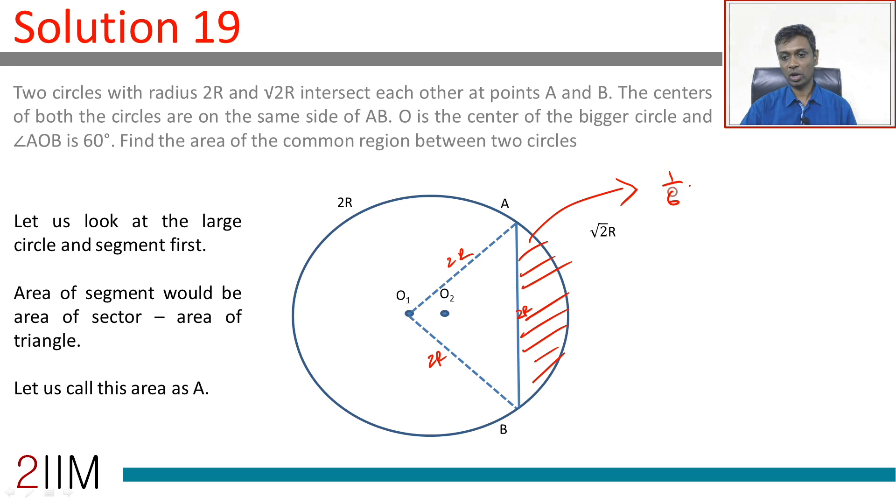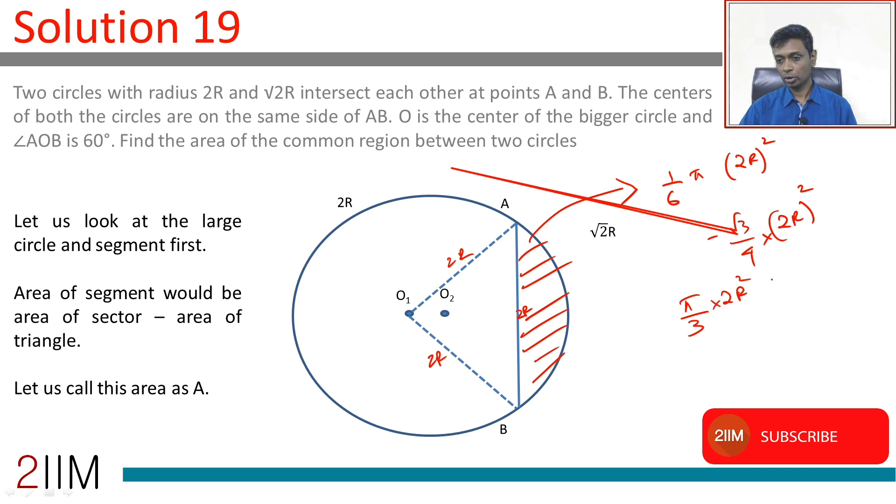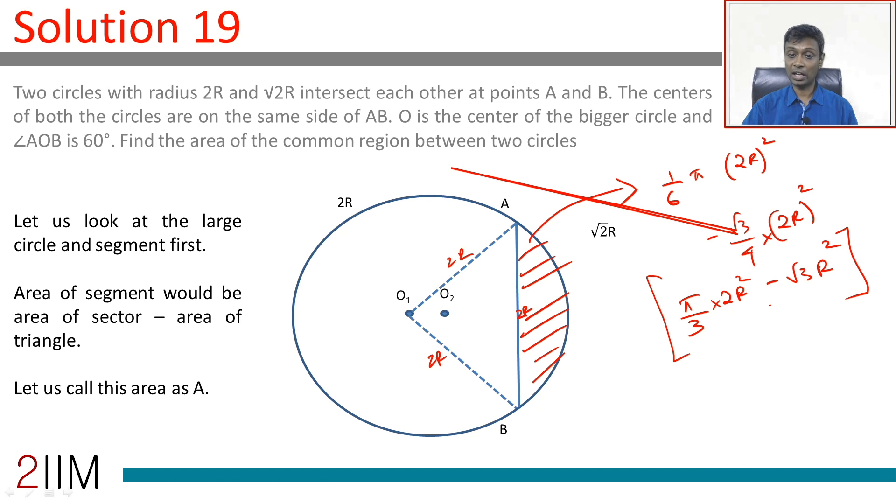Area of sector is 1 sixth of pi into 2R whole square minus root 3 by 4 into 2R whole square. And so, this is pi by 6 into 4R square or 2 pi by 3 R square minus root 3 by 4 into 4R square minus root 3R square. This is area of the small segment here, minor segment of the large circle.